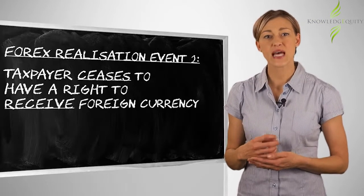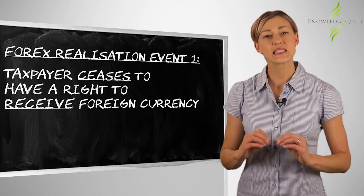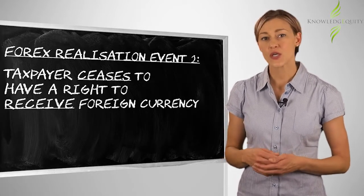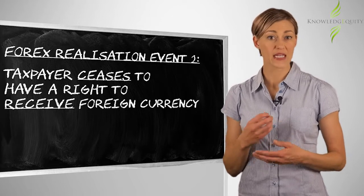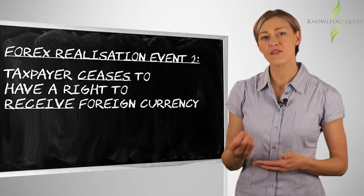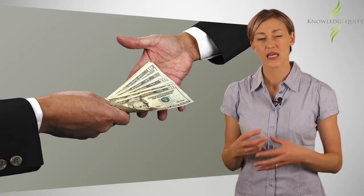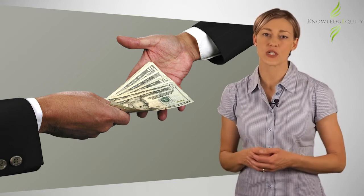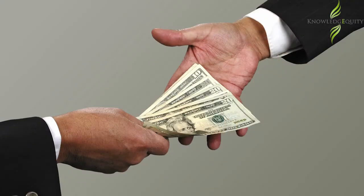FRE2 is where the taxpayer ceases to have a right to receive foreign currency. This occurs when the right expires, or the amount of foreign currency is received, in which case the right to receive is extinguished. For example, a withdrawal from a foreign currency denominated account, or receiving an amount from an overseas debtor under a sales contract denominated in a foreign currency.